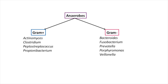Gram-positives and gram-negatives are our biggest groups, but there are some other smaller groups to consider. One of those groups includes the anaerobes. We can divide the anaerobes into gram-positives and gram-negatives. The gram-positive anaerobes include Actinomyces, Clostridium, Peptostreptococcus, and Propionibacterium.